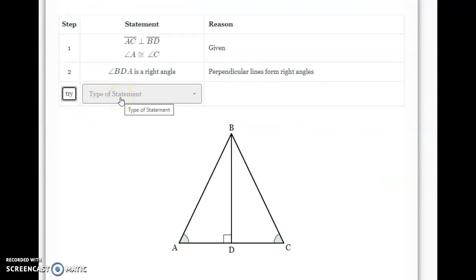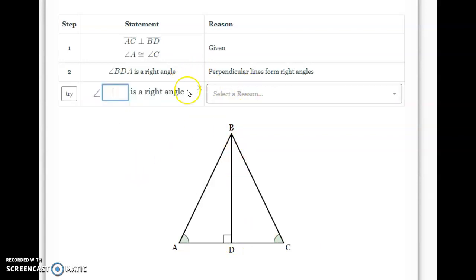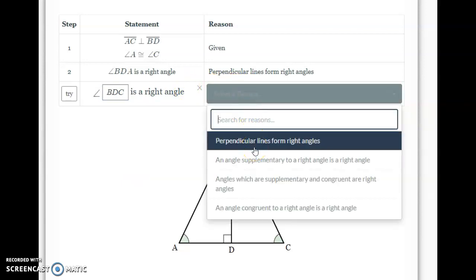I know that BDA is a right angle, and you'll see it labeled that for me on my diagram. So, I need to do the same thing for angle BDC. Again, I'm going to select the right angle. I'll type in BDC, and my reason is the same, that perpendicular lines form right angles.